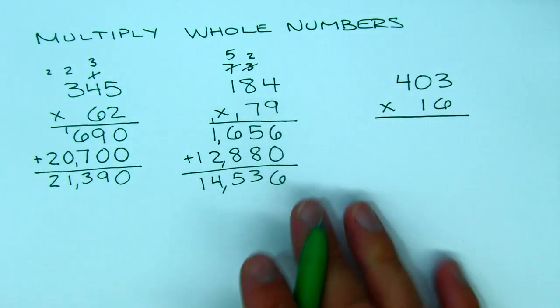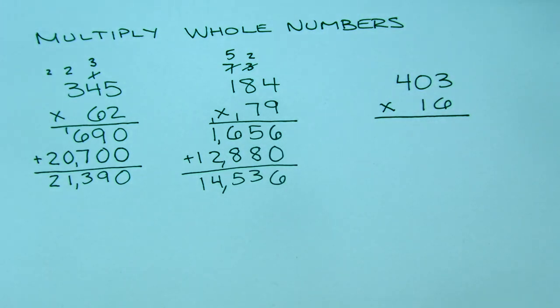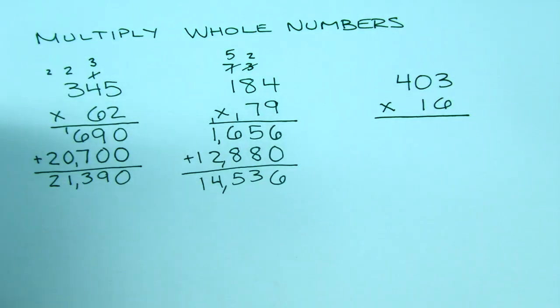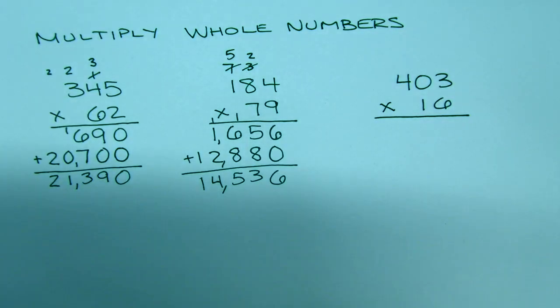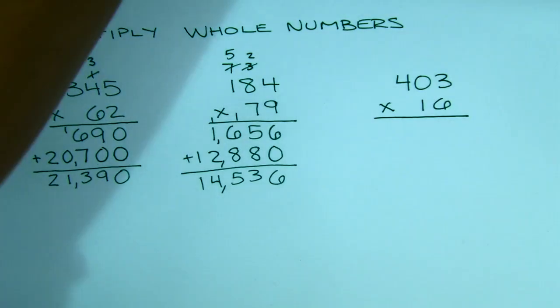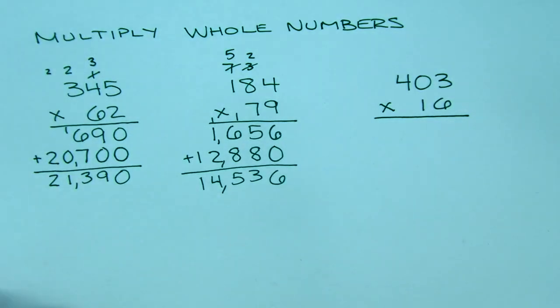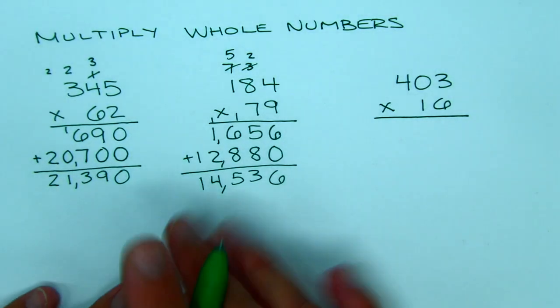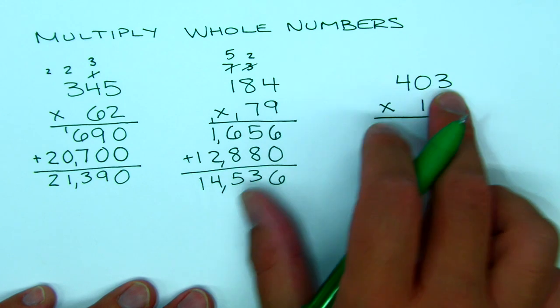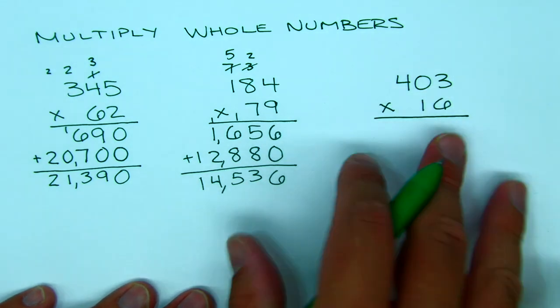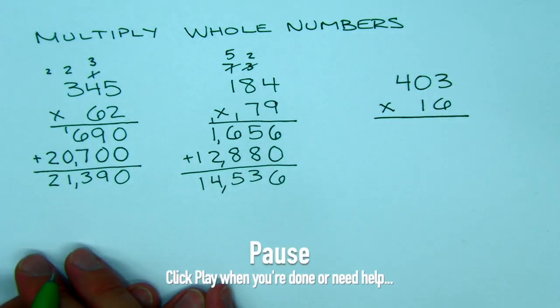Notice how everything stays in columns — that's really helpful. If you have trouble with handwriting when doing math, you can always hold your notebook sideways and use the lines as columns. That's a good little tip. So for the last one, pause the video — we're going to do 403 times 16 — then replay it when you're ready.